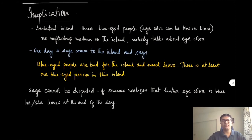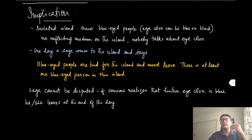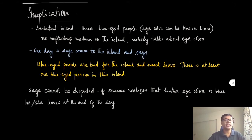Here is a specific example: an isolated island where there exist three blue-eyed people. Eye color can either be blue or black. All three people have blue eyes. There is no reflecting medium on this island so they cannot see their own eye colors, and they do not talk about eye colors. They can look at others' eye colors but cannot see their own.